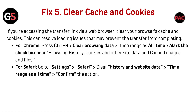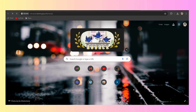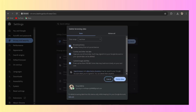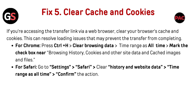Fix 5: Clear cache and cookies. If you are accessing the transfer link via a web browser, clear your browser's cache and cookies. This can resolve loading issues that may prevent the transfer from completing. For Chrome, press Ctrl+H, go to Clear Browsing Data, set the range to all time, and mark the checkboxes for browsing history, cookies and other site data, and cached images and files. For Safari, go to Settings, Safari, clear history and website data, set time range to all time, and confirm the action.